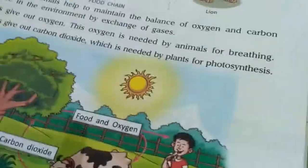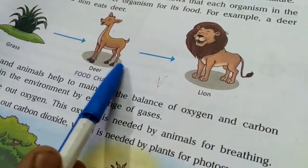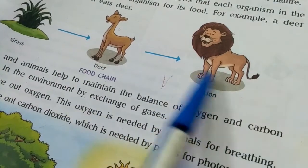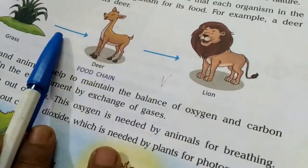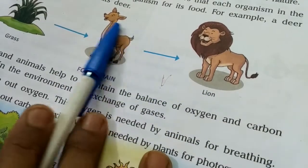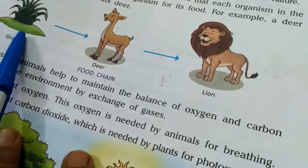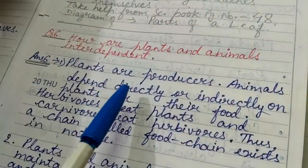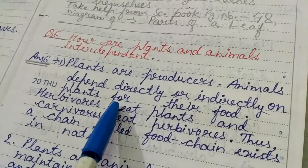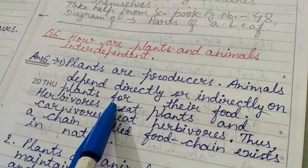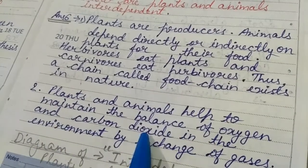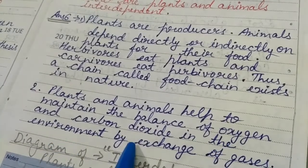This food chain is present in nature, showing that each organism is dependent on the lower organism for food — that is the food chain. It also shows how plants and animals are interdependent and need each other. Plants and animals help to maintain the balance of oxygen and carbon dioxide in the environment by exchange of gases.